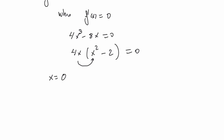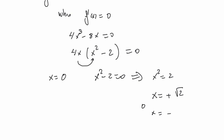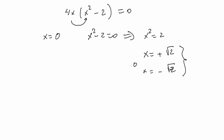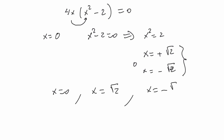The equation is also zero when x squared minus 2 equals zero, that is when x squared equals 2, or x equals plus square root of 2, or x equals minus square root of 2. So the critical points are x equals zero, x equals square root of 2, and x equals minus square root of 2. There is no point where the derivative doesn't exist, so these are all the critical points.